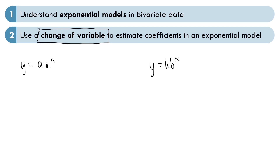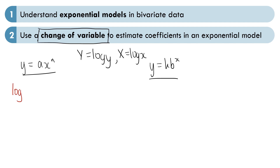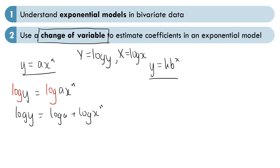Essentially, what the change of variable means here is that we should be able to code these two exponential equations into a linear equation, where capital Y equals log of y and capital X equals log of x. We can do this by taking logs of both sides. So we have log y equals log of ax to the power of n, and using our laws of logarithms, log y equals log a plus log of x to the power of n, using the product rule. Then we can bring the power of n down to get n log of x.